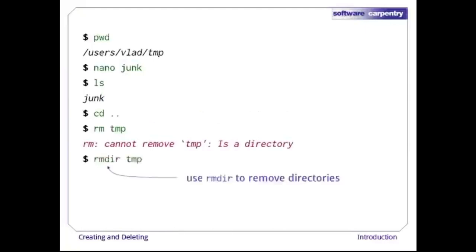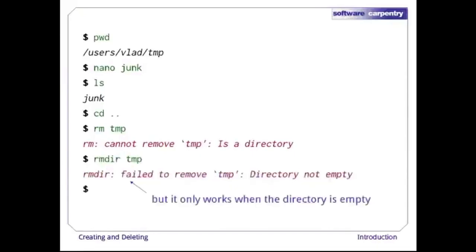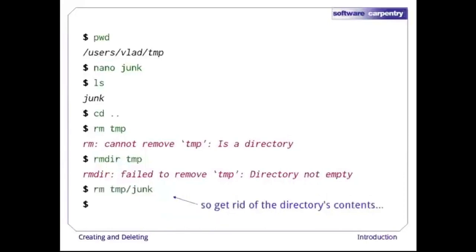The right command is rmdir, which stands for remove directory. It doesn't work yet either, though, because the directory we're trying to remove isn't empty. This little safety feature can save you a lot of grief, particularly if you are a bad typist. If we want to get rid of temp, we must first delete the file junk. The directory is now empty, so rmdir deletes it.